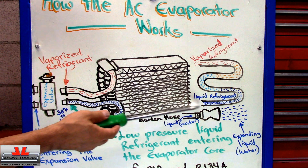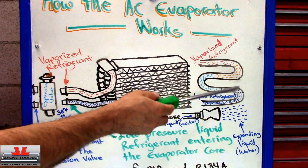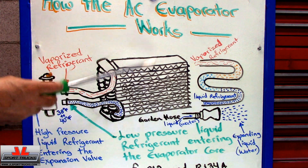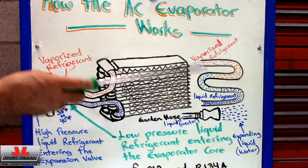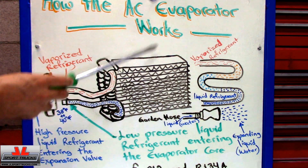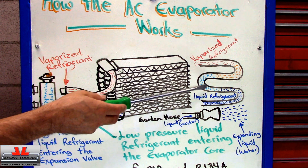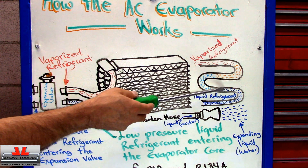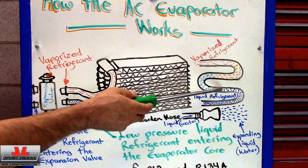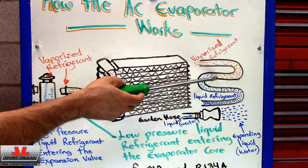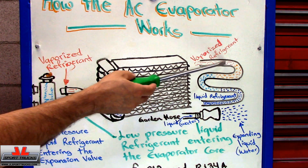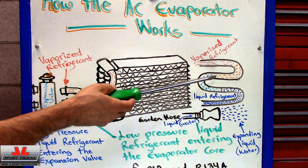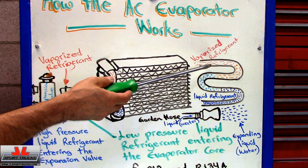The refrigerant is colder, and as it passes through the lines, the air that is inside your car is being forced through the fins. That refrigerant will start absorbing that heat. So then it starts changing from a liquid to a vapor, because the refrigerant has a very low boiling point.